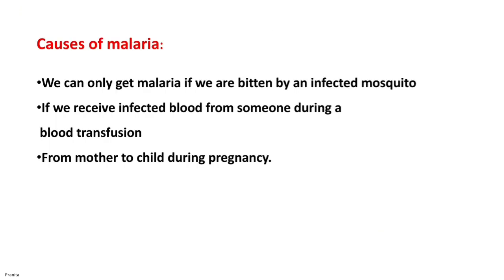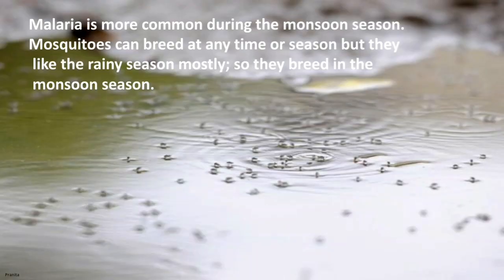What are the causes of malaria? We can only get malaria if we are bitten by an infected mosquito, if we receive infected blood from someone during a blood transfusion, or from mother to child during pregnancy. Malaria is more common during the monsoon season. Mosquitoes can breed at any time, but they prefer the rainy season and breed mostly in monsoon.